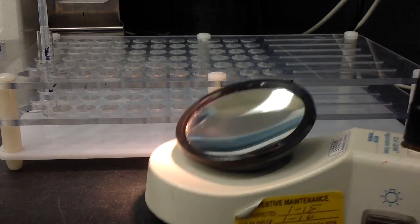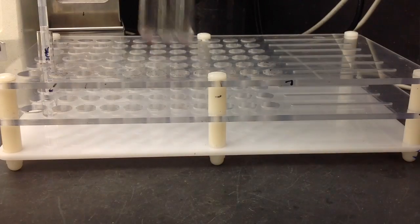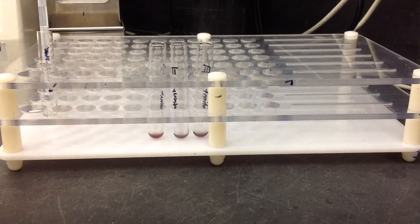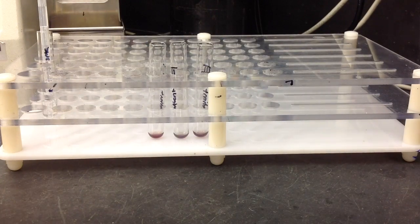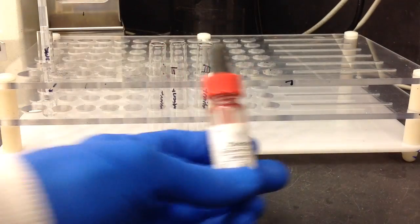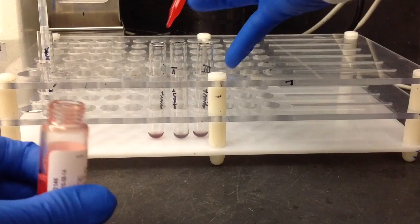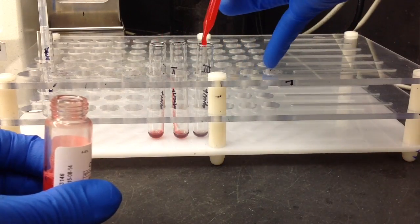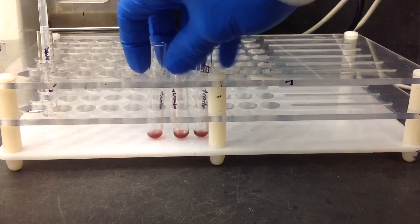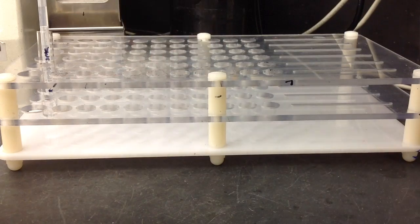And then after you've resuspended your cell buttons, the last step is going to be grabbing your check cell. Now you only do this if the tube was negative at AHG, but you're going to mix it and then add one drop to every one of the negatives, which in my case is all three. Give it a quick mix, pop it in the centrifuge...